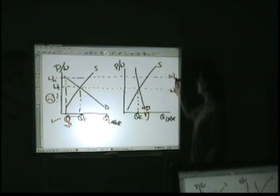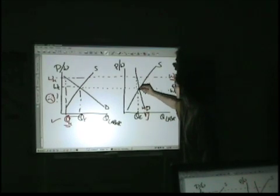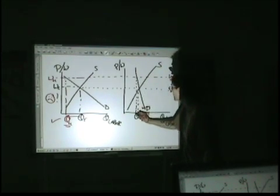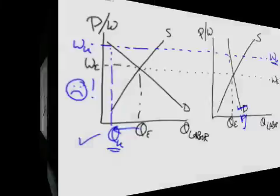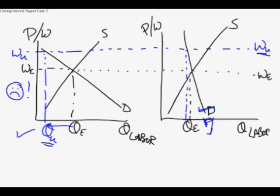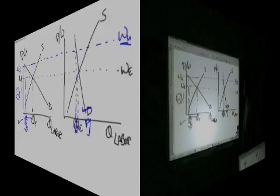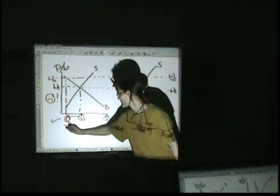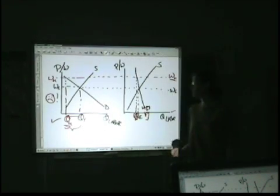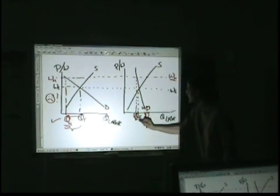In this market, with the same union wage, our equilibrium quantity is right here. We lost a very tiny bit on our horizontal axis. So, in this market, over here, that's a number of workers laid off. In this market, it's just this little bit right here.